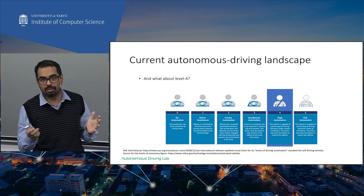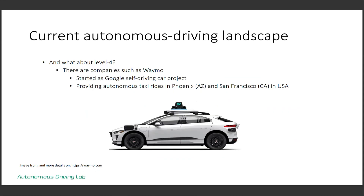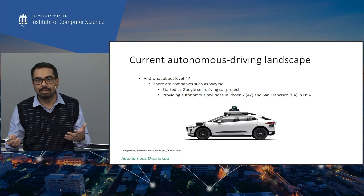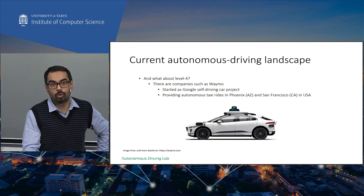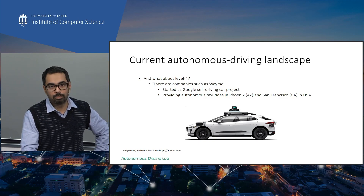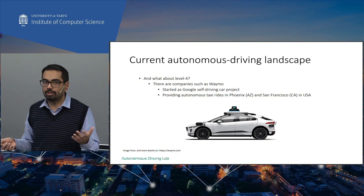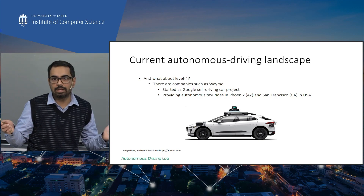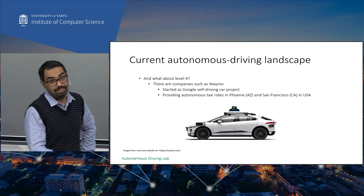Level four is full autonomy but restricted to specific geographical zones and good weather conditions. There are level four systems out there: Waymo, which started as the Google self-driving car project, offers autonomous taxi services in Phoenix, Arizona and San Francisco, California. There was also Cruise, which recently had setbacks — their vehicles were involved in crashes and they lost the ability to operate in California. Level four systems exist but are not widespread geographically.